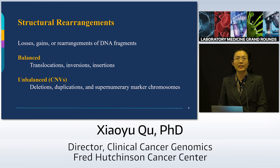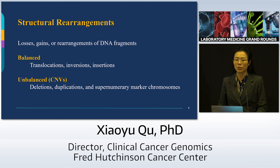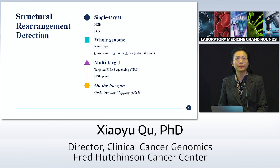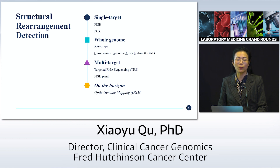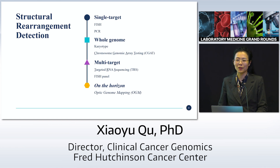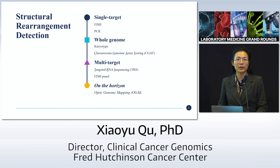Structural rearrangements are the focus of today's talk. These encompass losses, gains, or rearrangements of DNA fragments that can be balanced — such as translocations, inversions, or insertions — or unbalanced, entailing copy number variances such as deletion, duplication, or supernumerary marker chromosomes. I've grouped clinical tests into three major types: single-target assays, which are specific and fast; whole genome assays; and multi-target panel assays. I'll also touch on a new assay on the horizon: optical genome mapping.